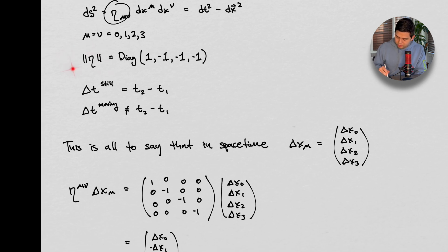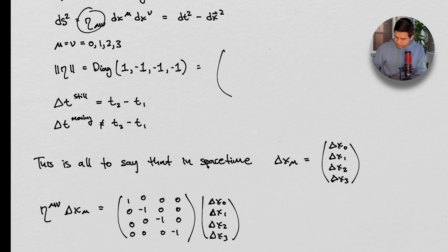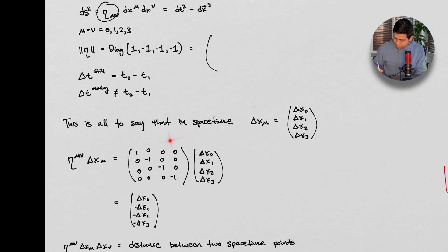And mu and nu travel between 0, 1, 2, and 3, or T, X, Y, and Z. The matrix eta, this is a Minkowski metric matrix, is given by this, right? Where this equals this guy down here.